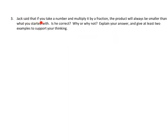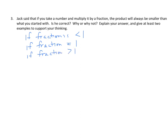Let's read number three. Jack said that if you take a number and multiply it by a fraction, the product will always be smaller than what you started with. Is he correct? Why or why not? Well, Jack is right some of the time — it depends on the fraction. If the fraction is less than 1, we end up with a smaller number. If the fraction equals 1, we have an equivalent fraction — it's not smaller, not larger, it's identical in value. If the fraction is greater than 1, then we end up with a product that's greater than our original factor.